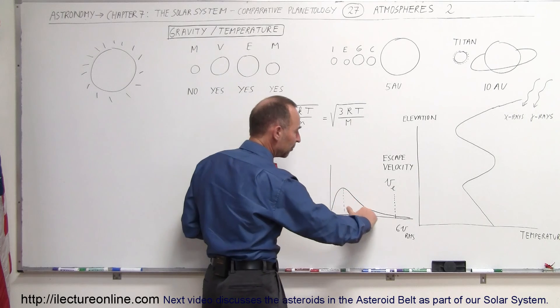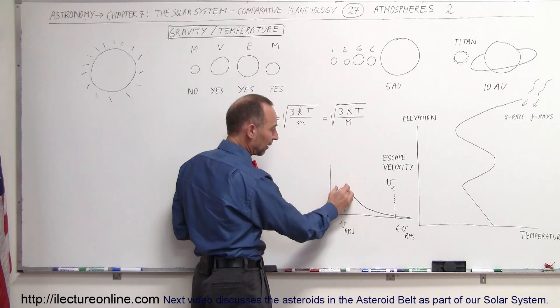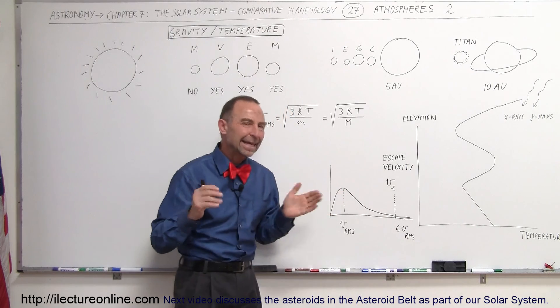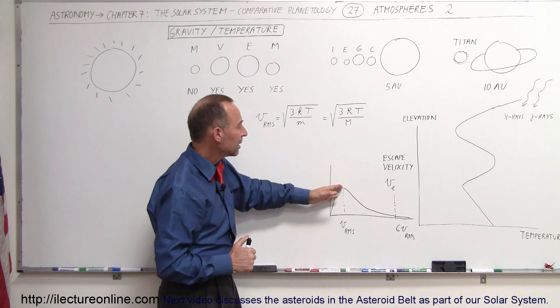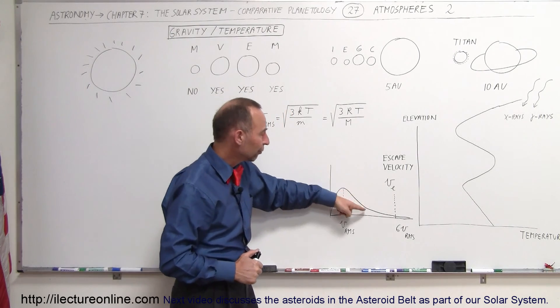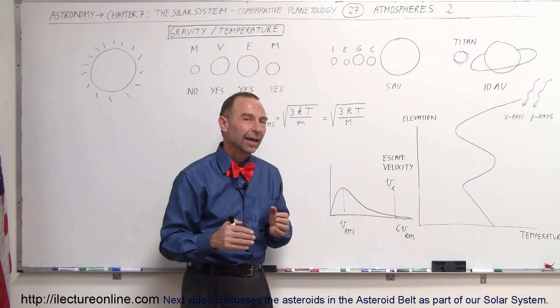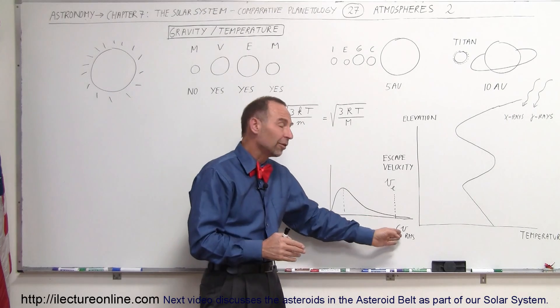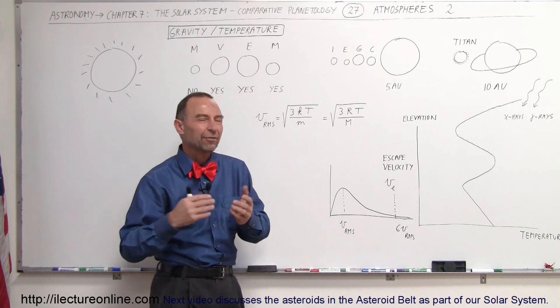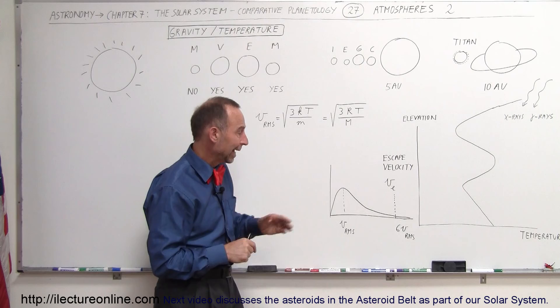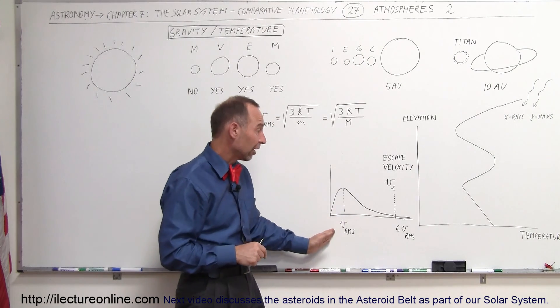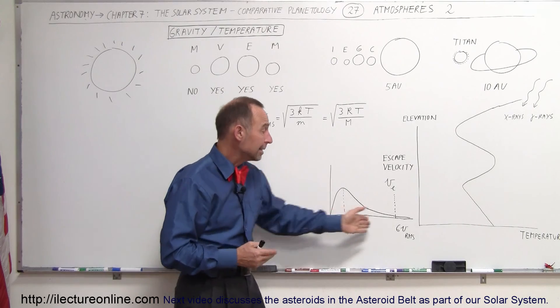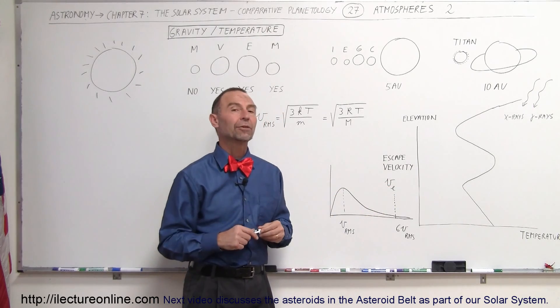Here's a distribution of the velocity of molecules. The vast majority of molecules have a certain velocity, called the RMS, kind of like the average velocity of the molecules in the atmosphere, but you can see that there's a few of them that go quite fast. Typically, the fastest molecules in the atmosphere travel at about six times the velocity of the RMS, or the average velocity of the molecules in the air. And if that six times the average velocity exceeds the escape velocity of that particular planet or moon, then the atmosphere will slowly leak off into space.